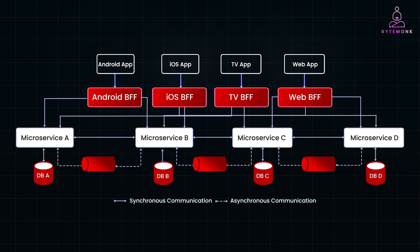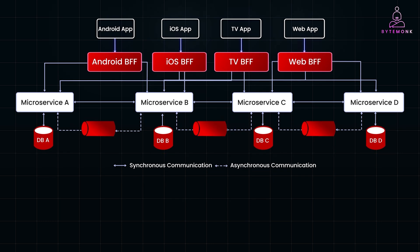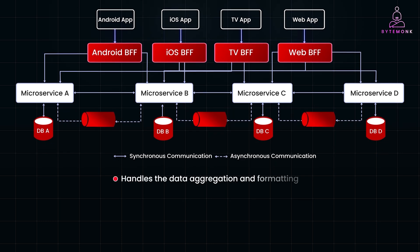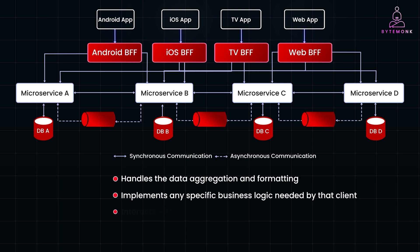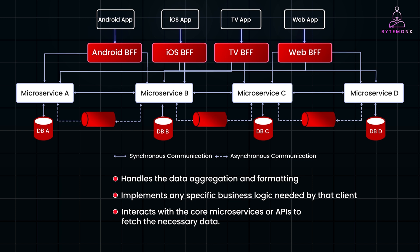To implement the BFF pattern, you'll typically start by identifying the different types of clients that interact with your system. For each client, you'll create a dedicated backend service that handles data aggregation and formatting, implements any specific business logic needed by the client, and interacts with the core microservices or APIs to fetch the necessary data. This setup not only makes your front-end applications more efficient, but also allows for easier scaling and maintenance. You can update or scale each BFF independently without affecting the others.